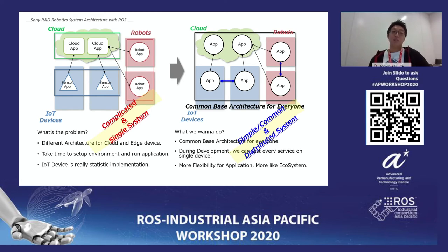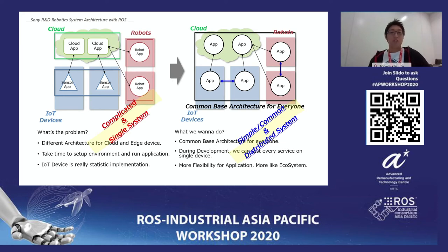On the right you can see a new architecture — simply put, once you develop the application, it can be run and deployed anywhere. Deployment is not really a task for application engineers, so they can just focus on the application. That is exactly what we want to achieve with this new architecture.